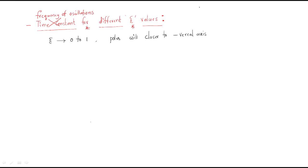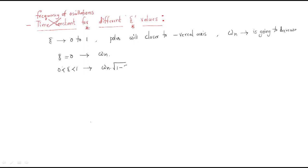For zeta equal zero, the frequency of oscillations is omega n. For zero less than zeta less than one, that is the under-damped system, it is omega n times the square root of 1 minus zeta squared. For zeta equal to one, the critically damped case, it is zero. And for zeta greater than one, it is also zero.